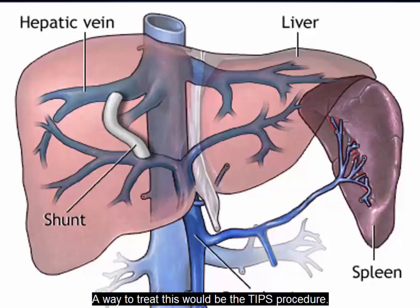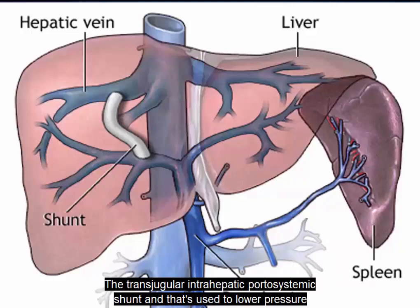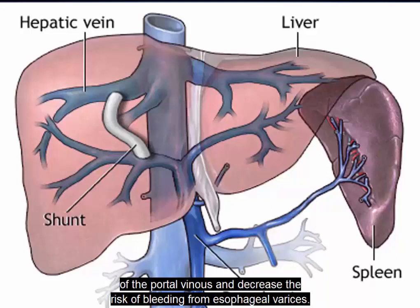A way to treat this would be the TIPS procedure, the transjugular intrahepatic portosystemic shunt, which is used to lower pressure in the portal venous system and decrease the risk of bleeding from esophageal varices.